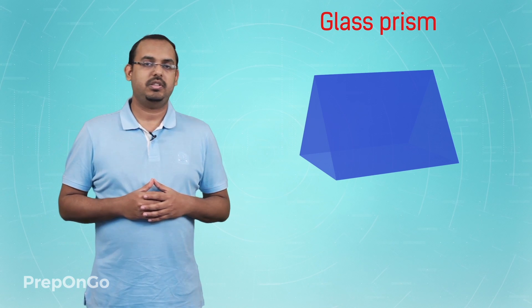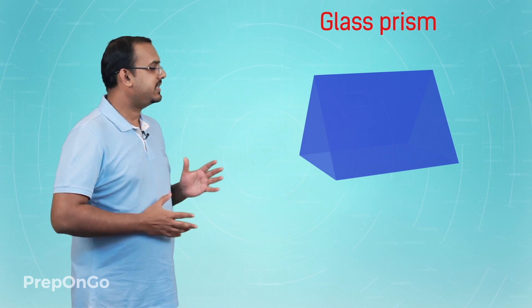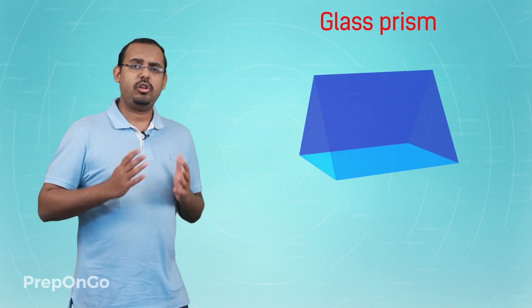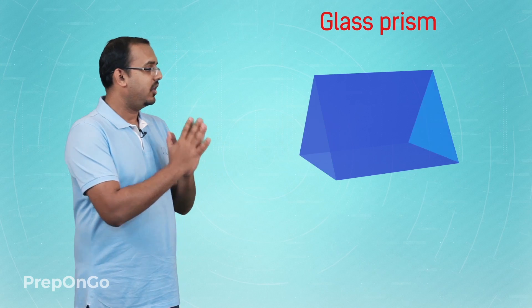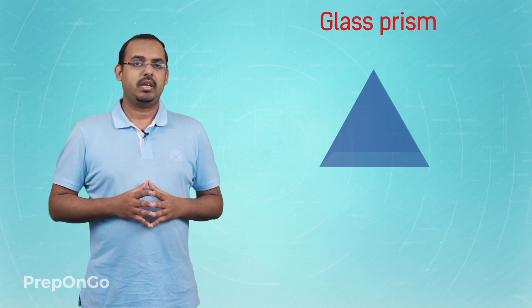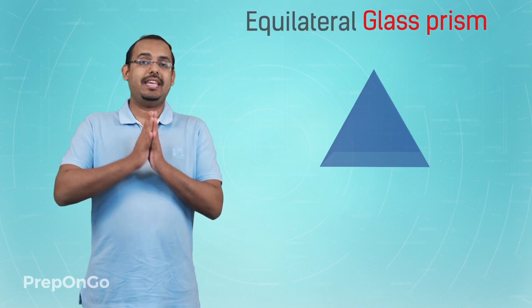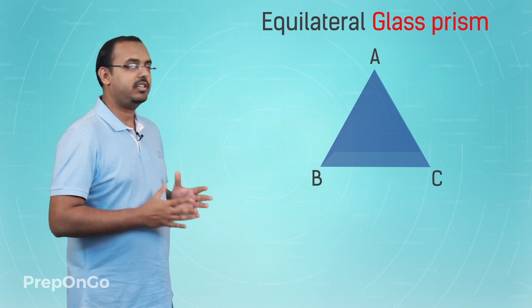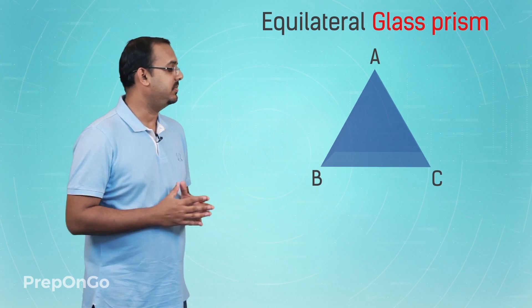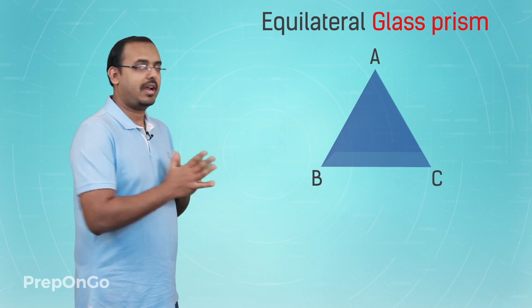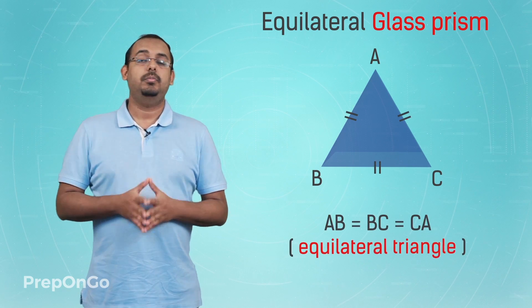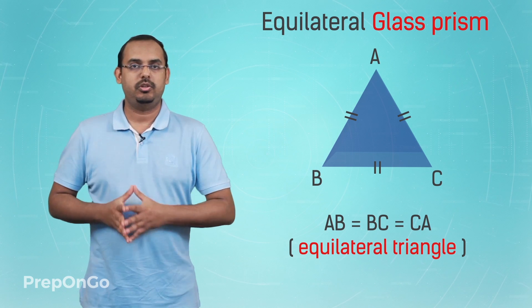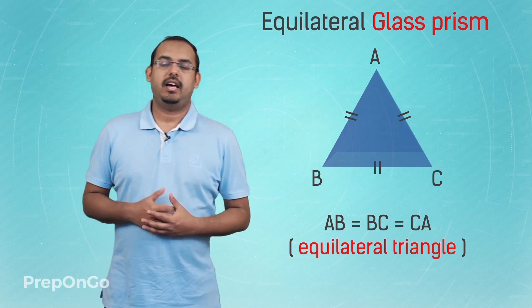Here we have a glass prism. You can see that there are three different rectangular faces of this glass prism. You can also see that there are two triangular faces as well. This glass prism that we are using is actually an equilateral glass prism. What this means is that the triangular cross section of this glass prism is an equilateral triangle, meaning that all three sides of this triangle are equal to each other. So this is the shape of the glass prism.